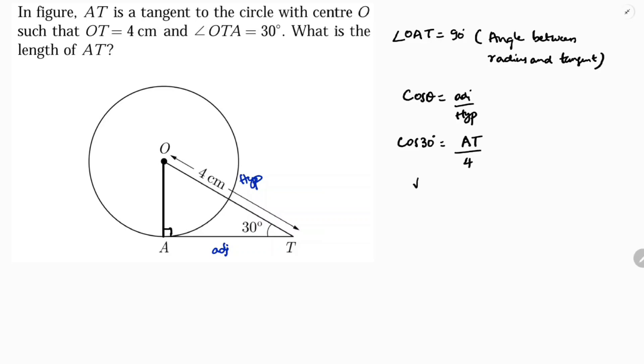Cos 30 value is root 3 by 2 equals AT by 4. If we cross multiply, 4 times root 3 by 2 is AT. If we cancel, 2 goes into 4 twice. So the length of AT is 2 root 3 centimeters.